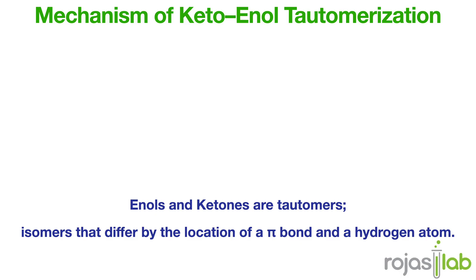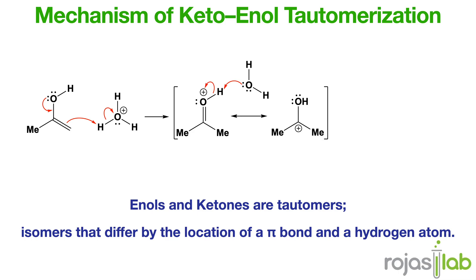Next, let's talk about keto-enol tautomerization. This is an equilibrium between the keto and enol forms via proton transfer. In the acid-catalyzed mechanism, the first step is to protonate the carbonyl oxygen, which results in enol formation via alpha proton removal. Key points are that the keto form is usually more stable, and this is a very important reaction in carbonyl chemistry and enolate reactions.